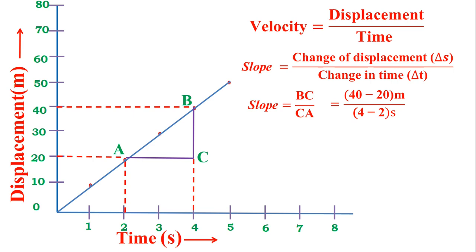If we subtract 20 from 40 we get 20 in the numerator, and if we subtract 2 from 4 we get 2 in the denominator. So 20 meters divided by 2 seconds gives us 10 meters per second. This is the slope of the displacement-time graph.